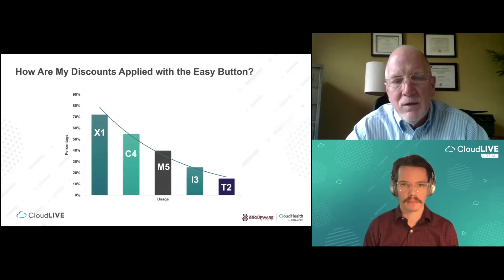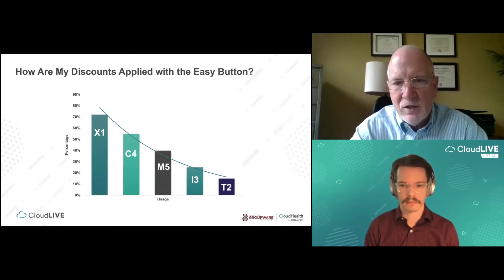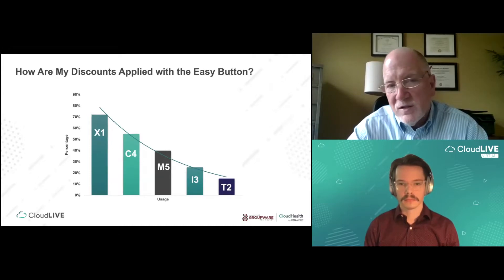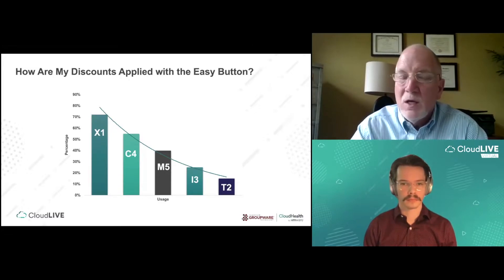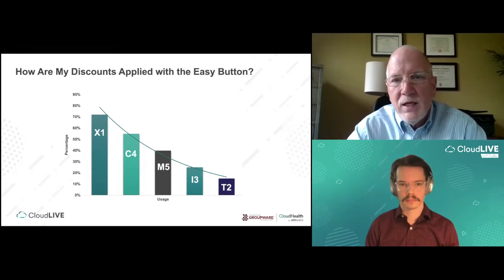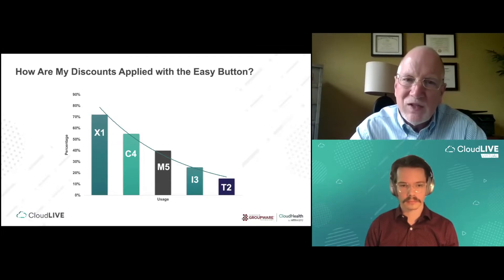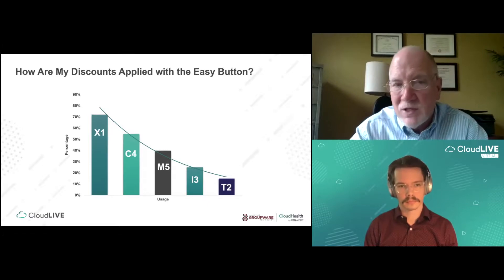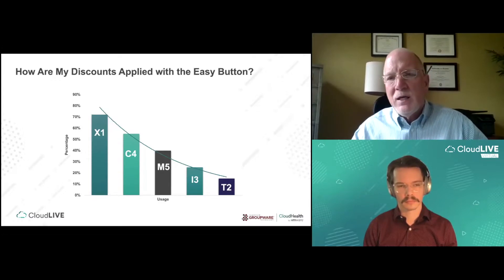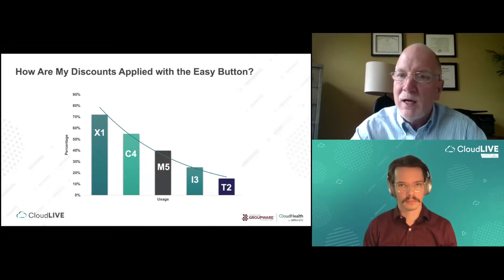How are discounts applied with the compute savings plan? If you have different instance types in your infrastructure — such as X1s, C4s, M5s, I3s, and T2s — all with different percentage savings, the way it works is that for any given hour, it will give you the maximum savings first. So if you have X1s, it's going to take them first at their 70% rate, then C4s, M5s, I3s, and T2s. In any given hour, no matter what happens to be running, it's going to maximize your dollar savings across your infrastructure.